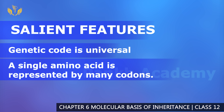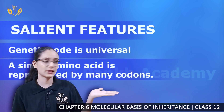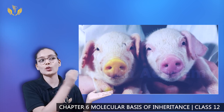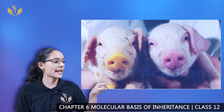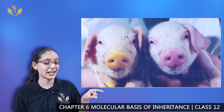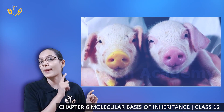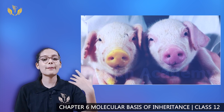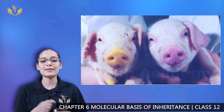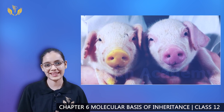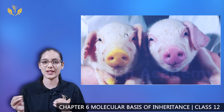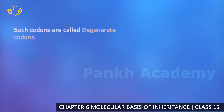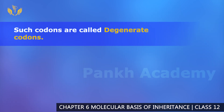When a single amino acid is represented by multiple codons with a slight difference, those codons are called degenerate codons. The amino acid is the same but it is represented in multiple codons. Such codons are called degenerate codons.